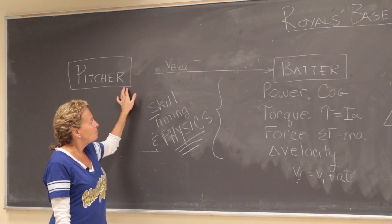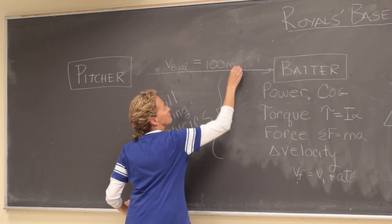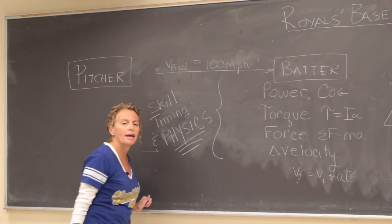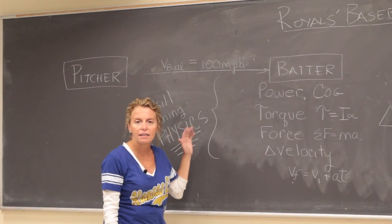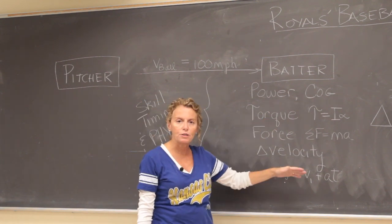So our pitcher pitches a fastball. We'll say the velocity of that ball is 100 miles per hour. Now our batter has to have the skill and timing in order to hit that ball, also has to have a lot of physics principles.